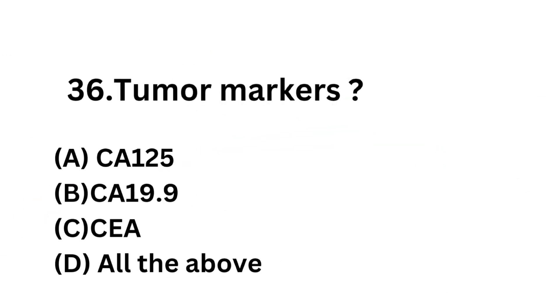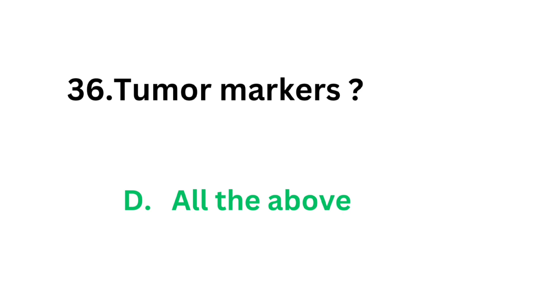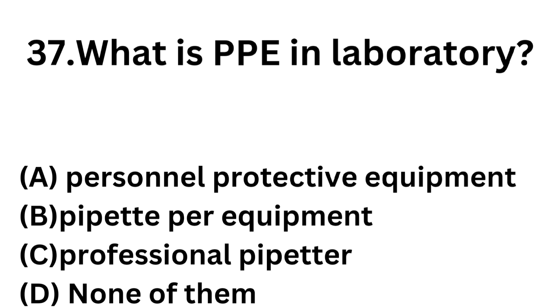Question number 36: Tumor markers — which of the following are tumor markers? Option A: CA 125. Option B: CA 19.9. Option C: CEA. Option D: All of the above. CA 125 is a tumor marker, CA 19.9 is a tumor marker, and CEA is a tumor marker. So the correct answer is Option D, all of the above. All these options are tumor markers.